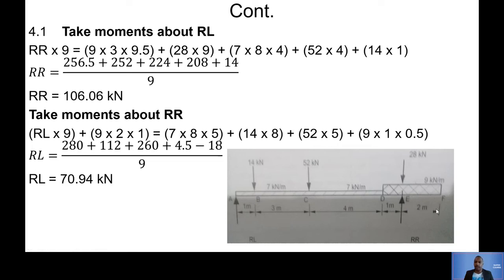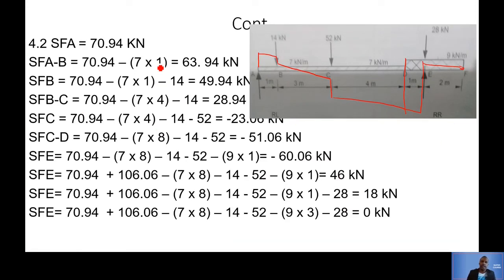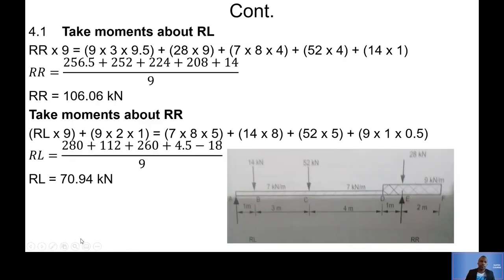We start with the reactions by taking a moment about A, adding all loads accordingly. The reaction at R on the right is 106 kN and the reaction at the left support is 70 kN. Those are our two support reactions. You can work through the full calculation on your own if you have time.